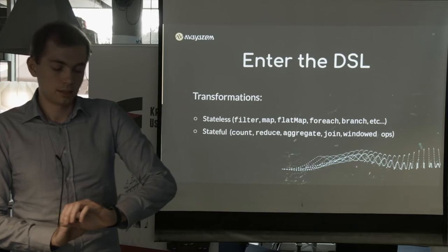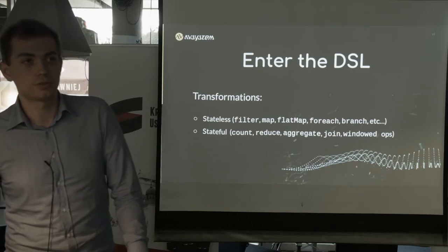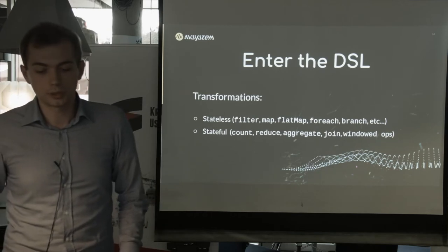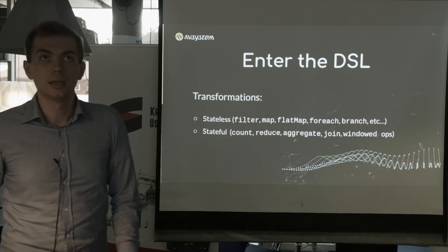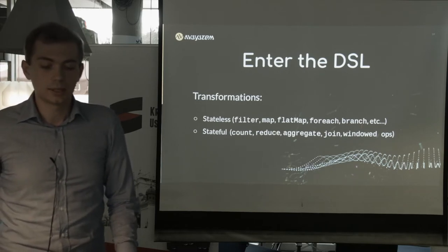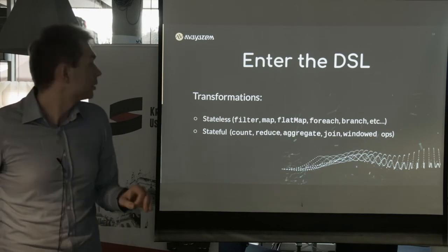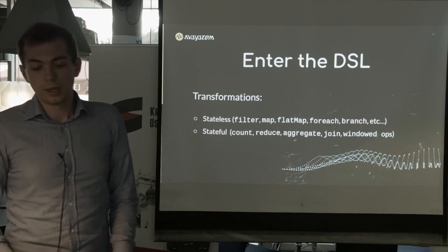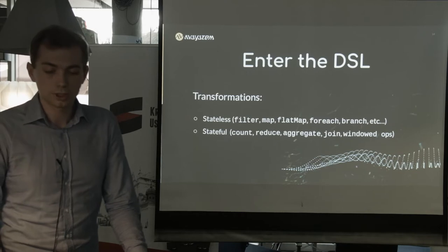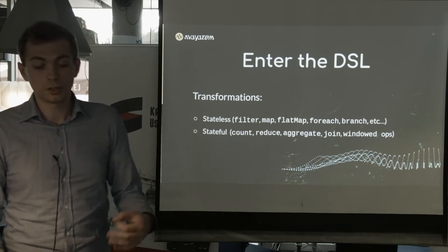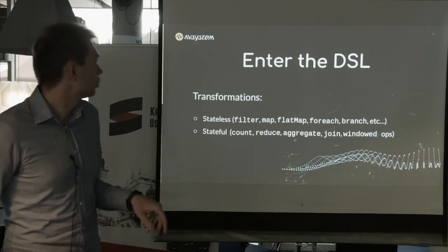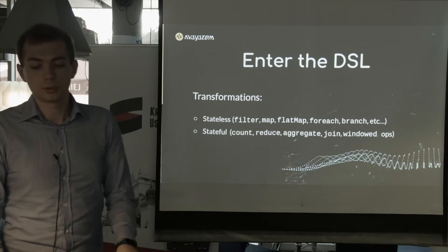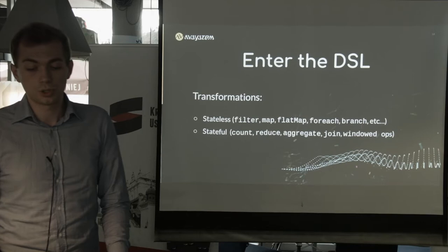We have stateless and stateful transformations in the Kafka Streams API. For stateless operators we have filter, map, flatMap, forEach. For stateful operators we have count, reduce, and aggregate — the first two are actually redundant because you can do everything with just aggregate, which is the most generic one. We also have join operators and window operators, which are specifically interesting because when you process streaming data you sometimes want to process it in time windows — for example aggregating data hourly or in one-hour tumbling windows, or in hopping windows.